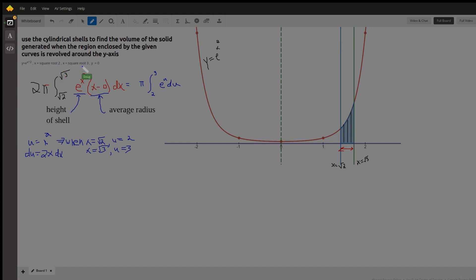We want to look at the region bounded by that curve and the lines x equal to the square root of 2, which is this vertical line, and x equals the square root of 3, giving us this region.